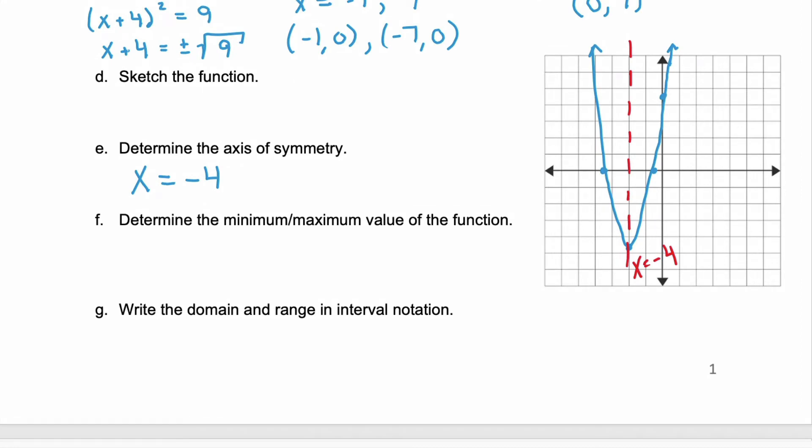Now we want to determine do we have a minimum or a maximum, and what the value is of that. Well, our parabola opens up, so we have a minimum. And remember that the value of the function is the y coordinate. So here we have a minimum, and the value is negative 9.